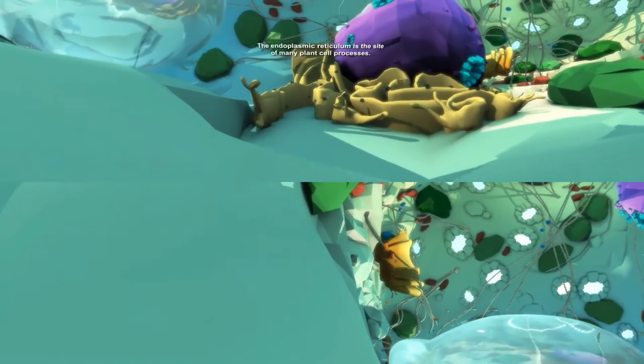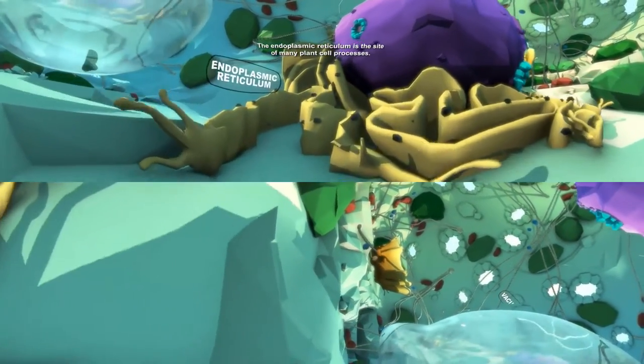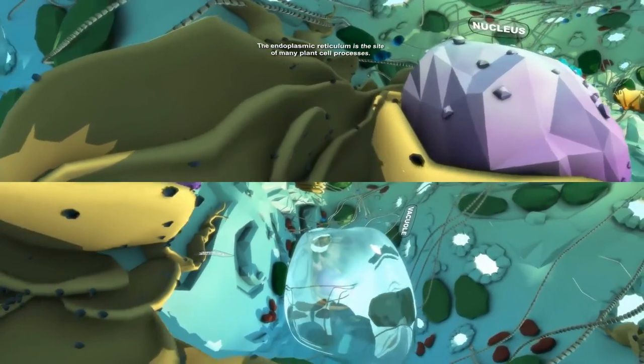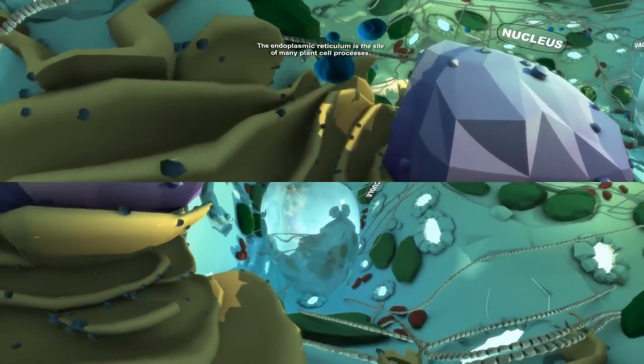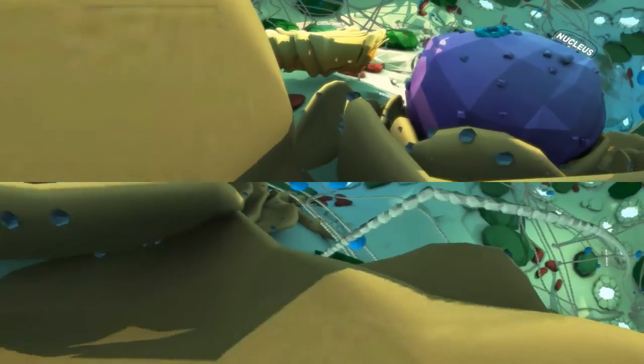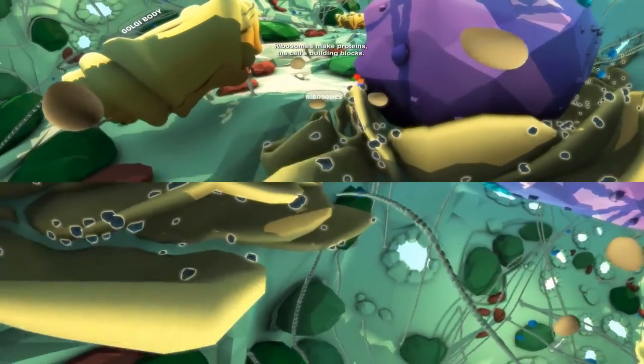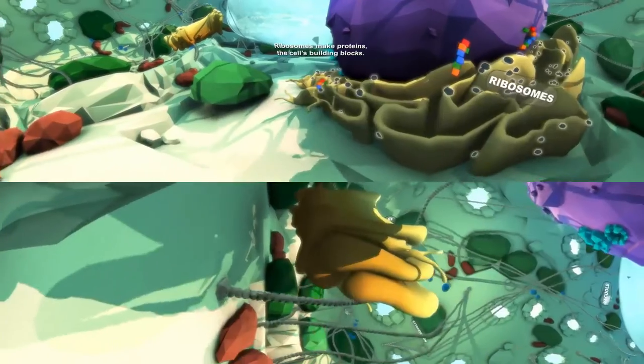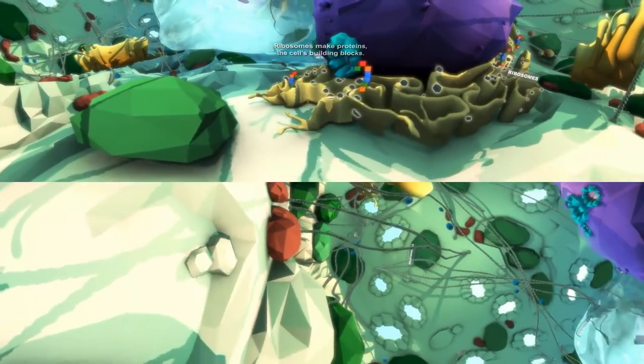The endoplasmic reticulum, or ER, is a network of flattened membranes. The ER is the site of many different processes inside of a plant cell. Found on the endoplasmic reticulum are smaller bodies called ribosomes. These are responsible for making proteins, the building blocks of a cell.